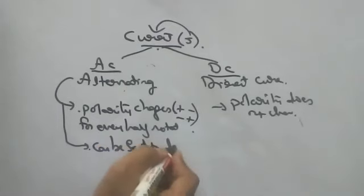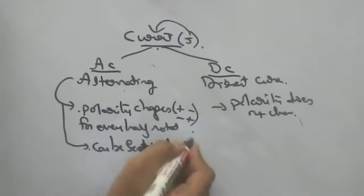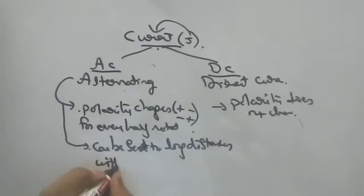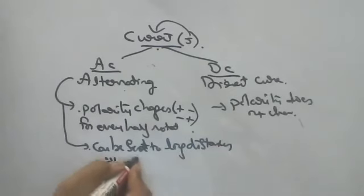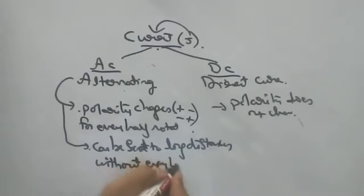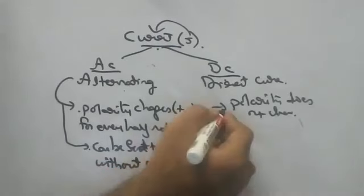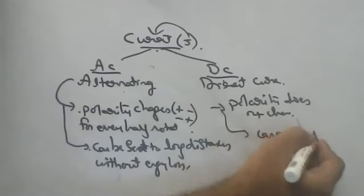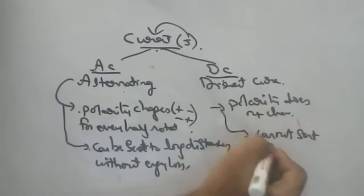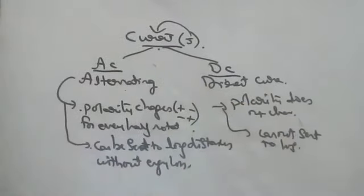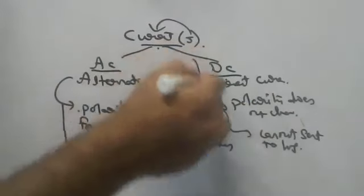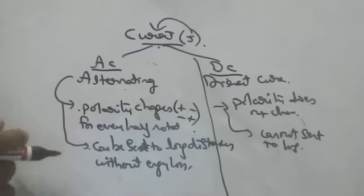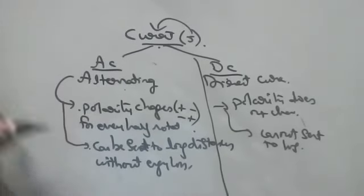AC can be sent to long distances without energy loss, whereas DC we cannot send to long distances. Wherever you are producing DC current, there only you should use it.